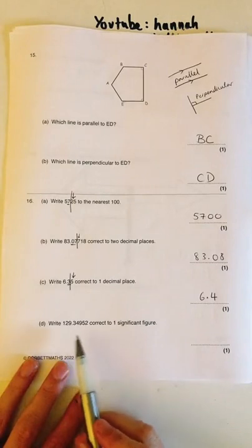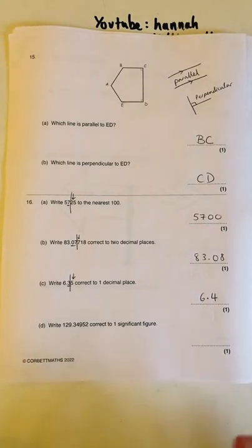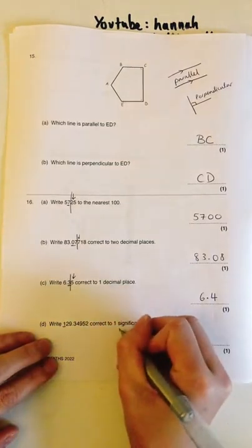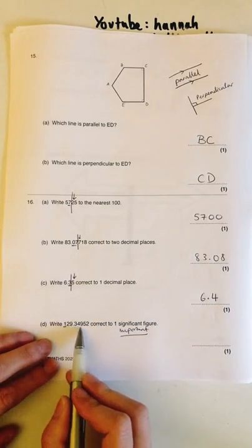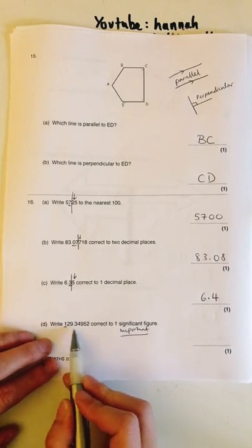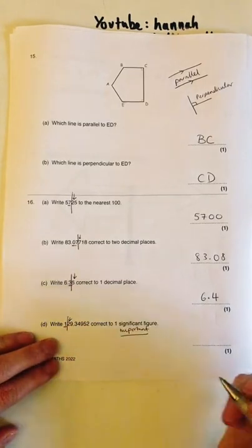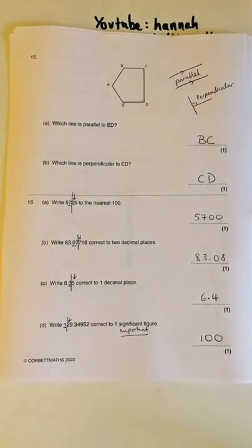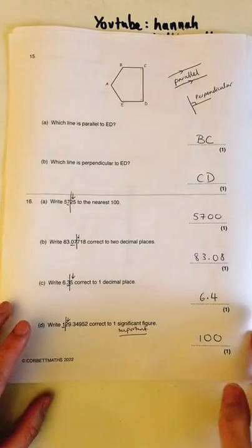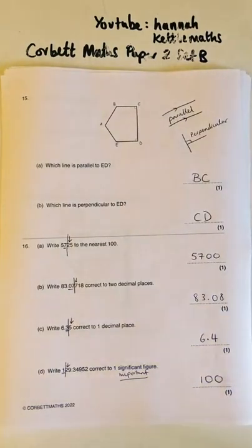Write to one significant figure — one significant figure means just one non-zero digit. The most important number here is the 1 in the hundreds place (100 is worth more than 20, 9, or 30p). Chop, check — 2 rounds down, so the answer is 100. Keep those zeros as placeholders.